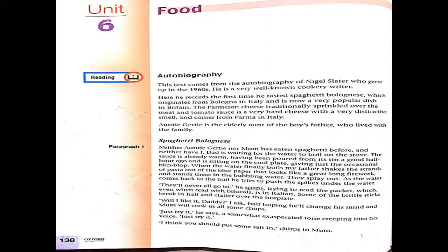Here he records the first time he tasted spaghetti bolognese, which originates from Bologna in Italy and is now a very popular dish in Britain. The parmesan cheese traditionally sprinkled over the meat and tomato sauce is a very hard cheese with a very distinctive smell and comes from Parma in Italy. Aunty Gertie is the elderly aunt of the boy's father who lived with the family.